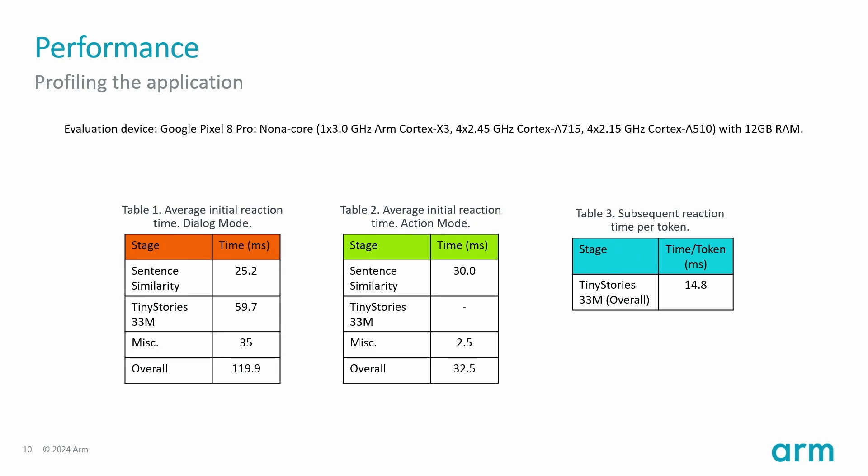Let's see the video I recorded. You will see the explained pipeline in action: how we interact with the NPC in dialogue mode, and how the sentence similarity model detects that an action must be performed and the NPC switches to action mode. I will be available after the talk to show the application if anyone would like to try it.